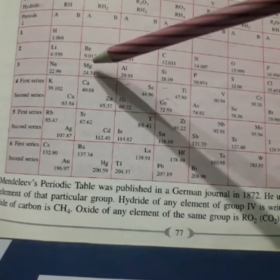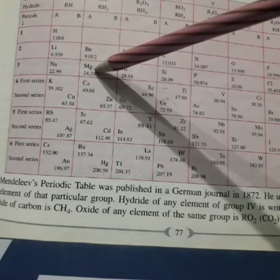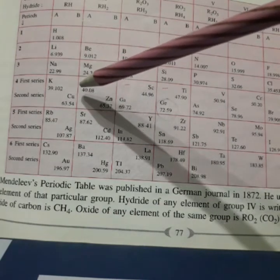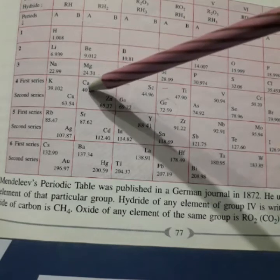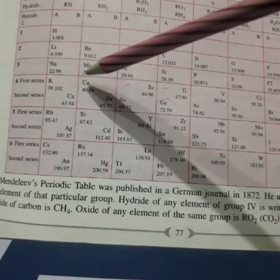Same way, you can take magnesium and calcium. Magnesium react with oxygen to form MgO. And calcium react with oxygen to form calcium oxide with formula, CaO. Both are having same oxide formula.